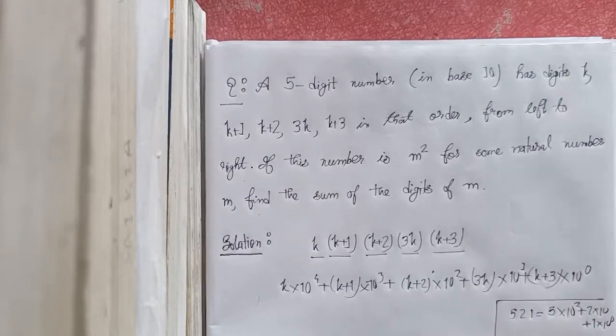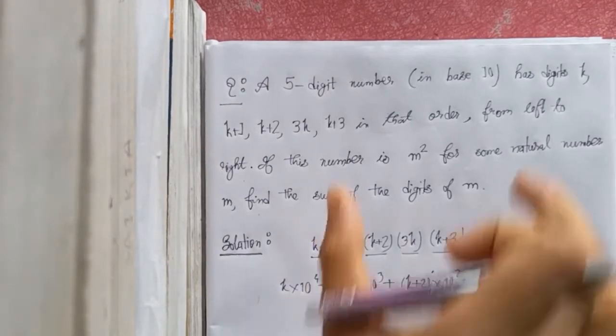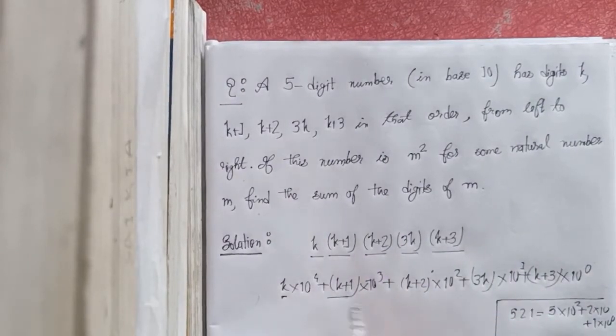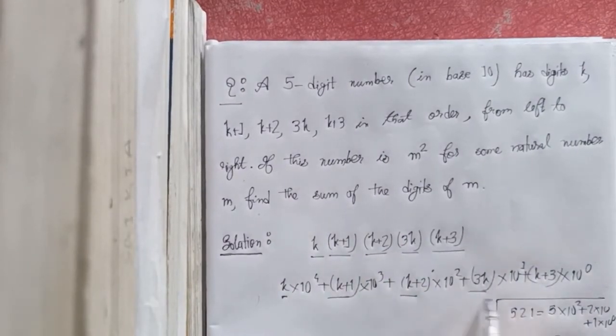So we will expand this number. G is k, k+1, k+2, k+3, and k+3 is equal to 0.